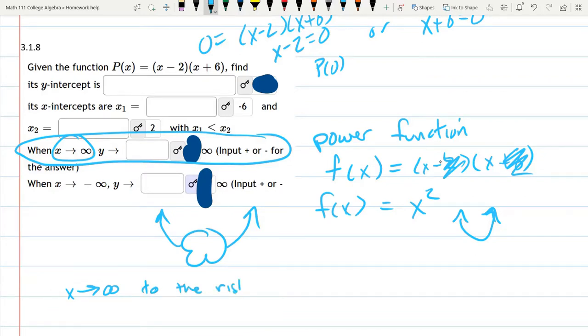So what happens when you go to the right? We're referring to this part of the end behavior, so y, or f of x, approaches positive infinity. We'll put a positive here for that answer.